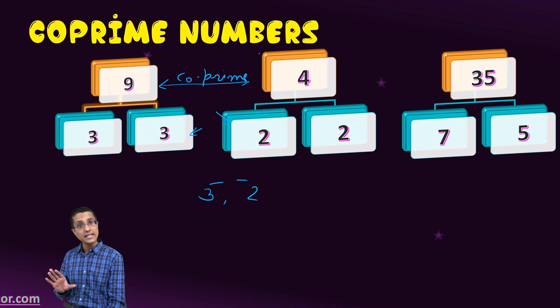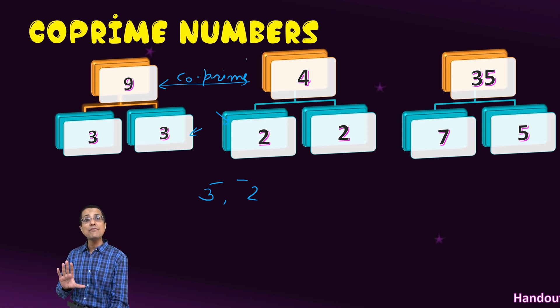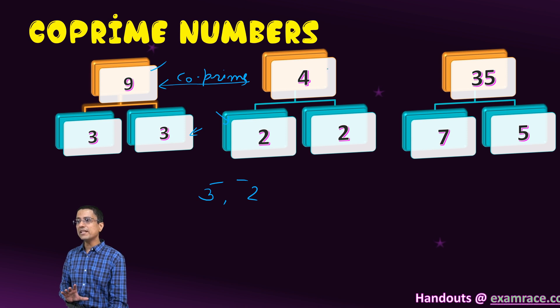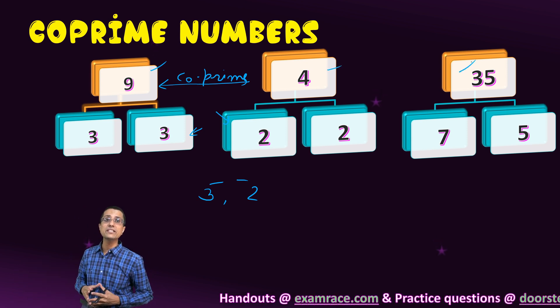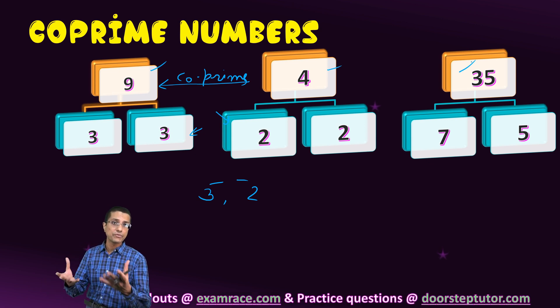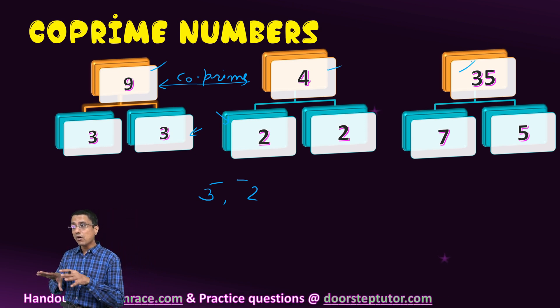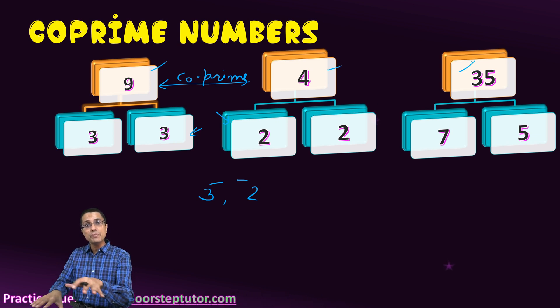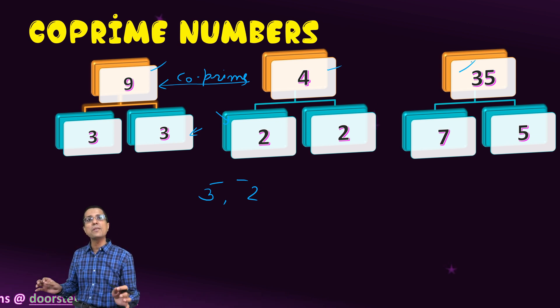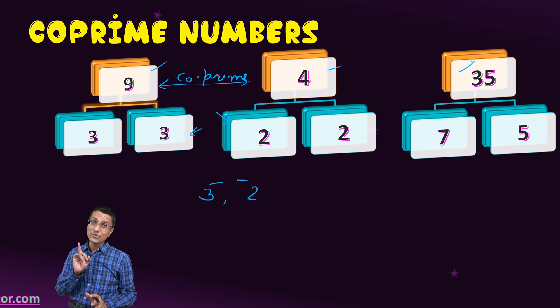But other than the prime numbers, I can still have co-prime numbers. So here we have an example of 3 numbers: 9, 4 and 35. They have no common factors between them except one, of course. And therefore, they are all co-prime to each other. So co-prime, remember, it denotes relationship between numbers. It does not apply to an individual number. Very, very important.